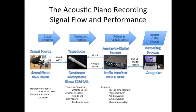The acoustic piano recording's signal flow and performance. The piano produces its sound when its strings are struck by a hammer. The vibrations of the string move air. That sound wave is picked up by the microphone, which converts the sound wave into voltage waves. The voltage waves are sampled by the audio interface into a stream of digital packets, which are then processed by the computer.